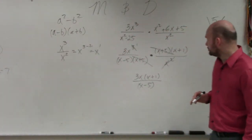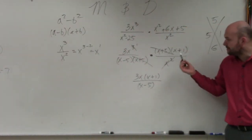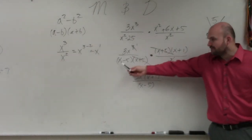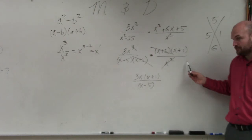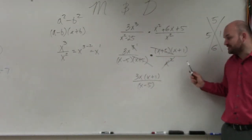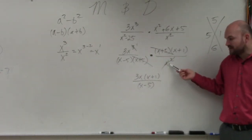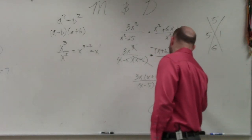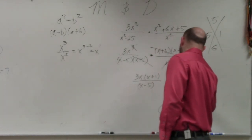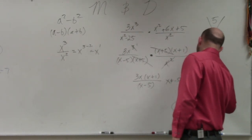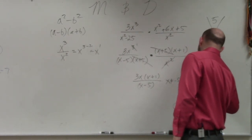Then we have to go back to our constraints. Look at the bottom — what can x not equal? If x equals positive 5, the denominator would be 0. If x equals negative 5, this would also be 0. And if x equals 0, everything would again be 0. So we say: x cannot equal negative 5, x cannot equal positive 5, and x cannot equal 0.